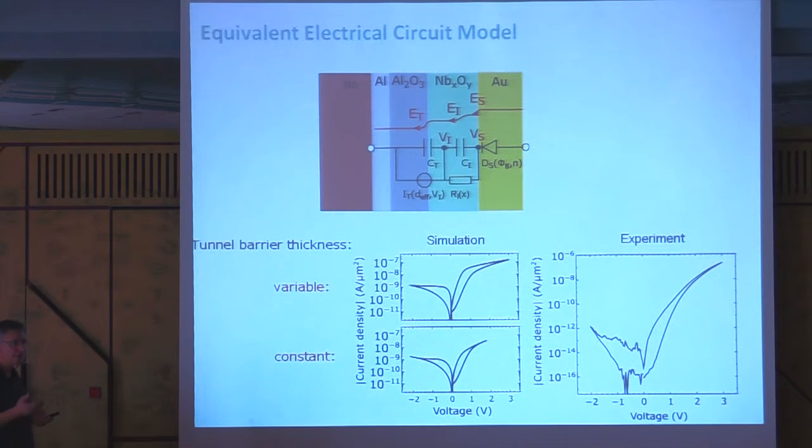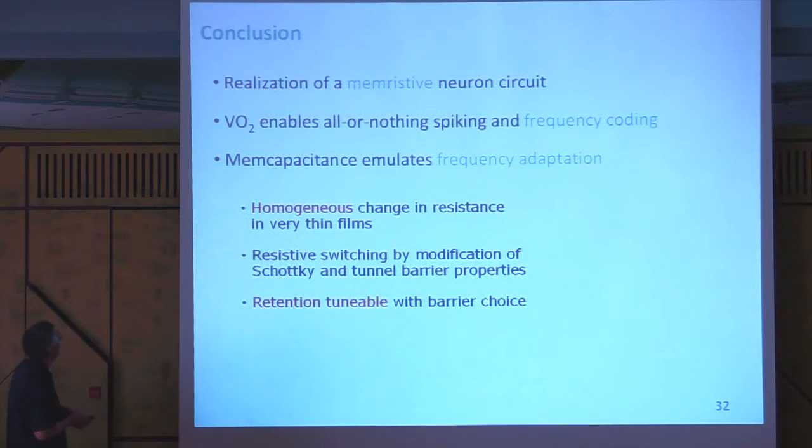So the conclusion is we have a realization of a memristive neuron circuit, we have vanadium oxide that enables the all-or-nothing spiking in frequency coding. Memcapacitor emulates frequency adaptation, like in the experiment of Adrian more than 90 years ago, and we have a homogeneous change in resistance in very thin films, as the device I showed, and we have to take into account tunnel barrier properties and the Schottky barrier as well, and the retention is possible with the barrier choice.